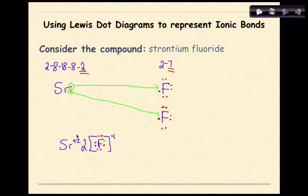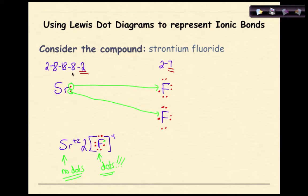One key thing to remember: the strontium ion shows no dots because it lost all its valence electrons completely — the fluorine ions accepted them. Do not look at the electron configuration for strontium and add dots from the inner shell — those are core electrons, not valence electrons. Your metal will have no dots; your nonmetal will have dots with the appropriate charge of minus 1. The coefficient of 2 represents 2 fluorine ions.